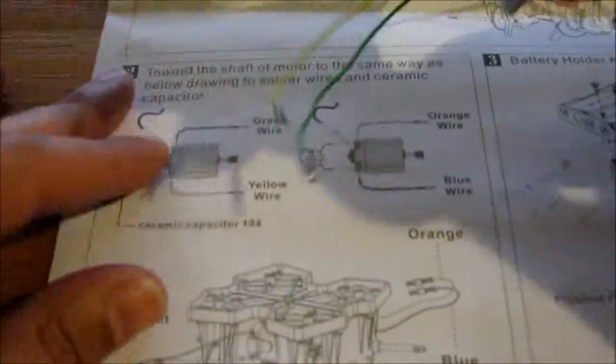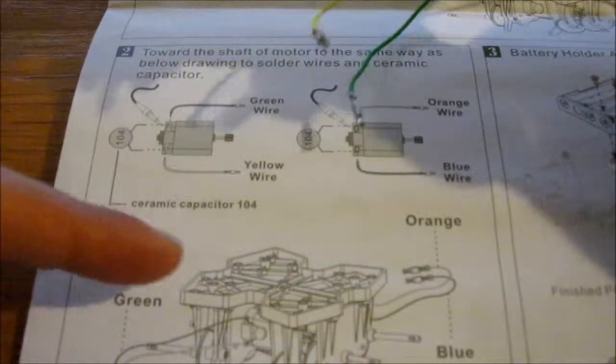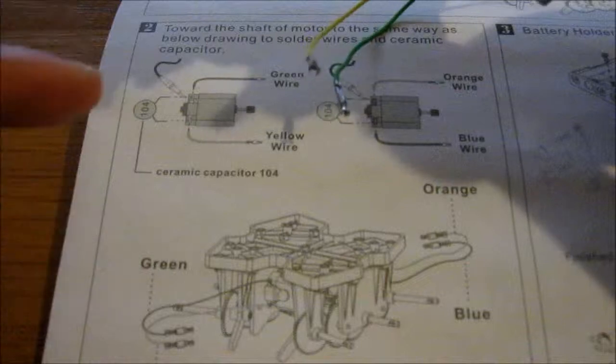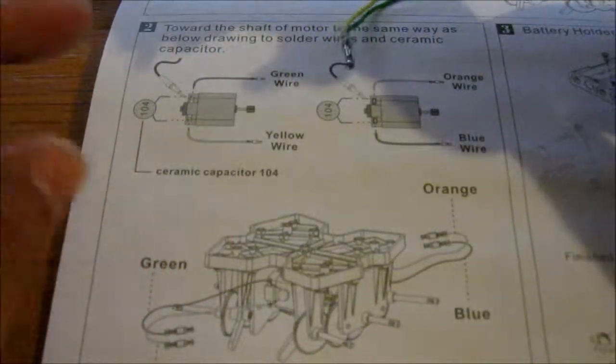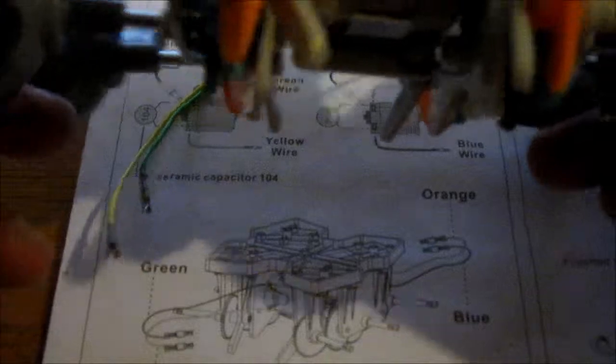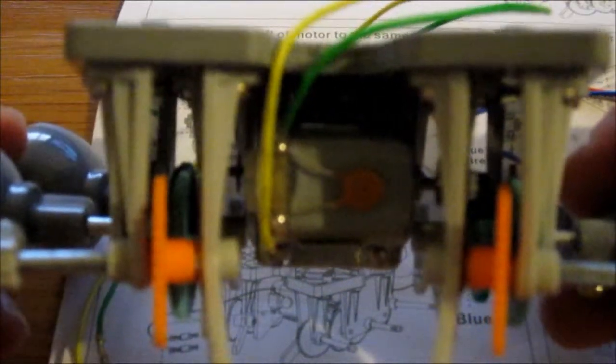And what you do is you solder the ends of the wires. There's the diagram there for you. I'll actually put a link because I'm pretty sure you can get the actual document as a PDF just in case you don't have it, and because it's really helpful following the instructions that come with the kit.